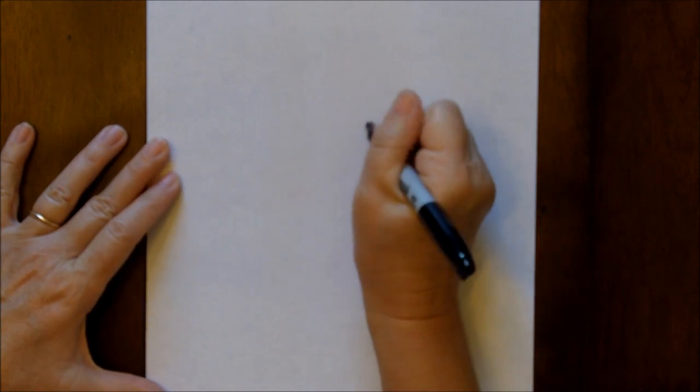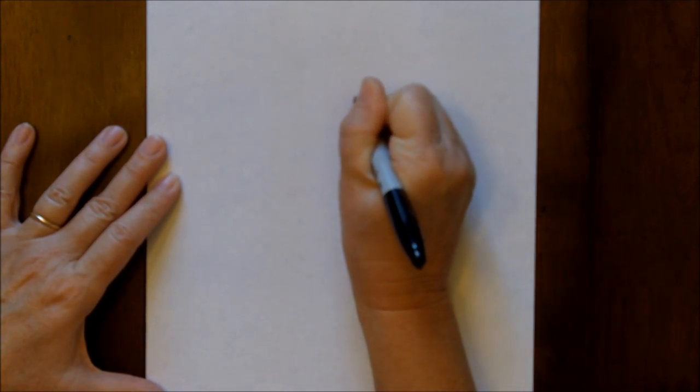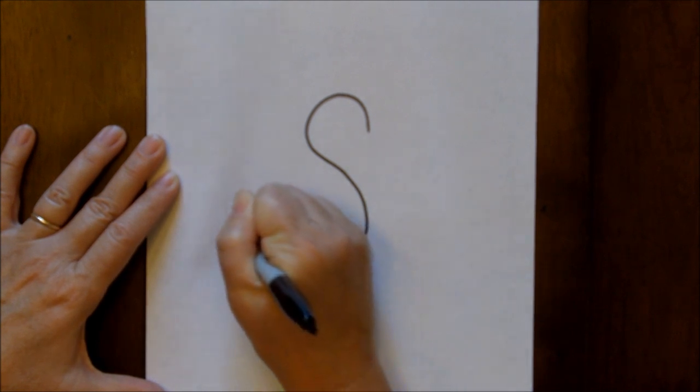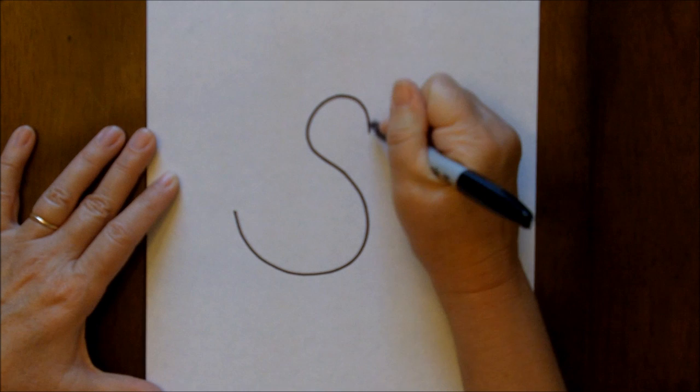We're going to start with the letter S. But the tricky thing about this is the top part of the S has to be smaller than the lower part of the S. Let me show you why and how.